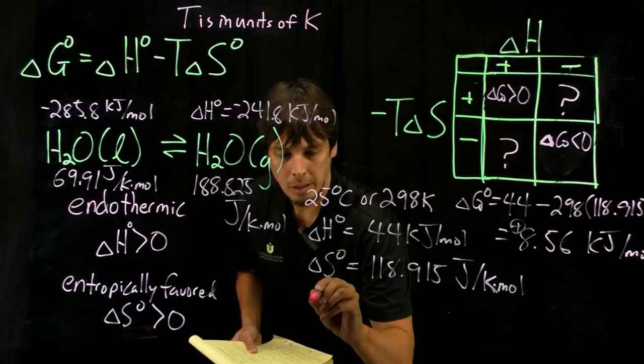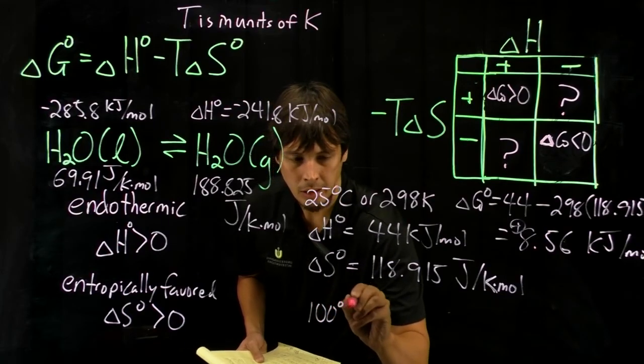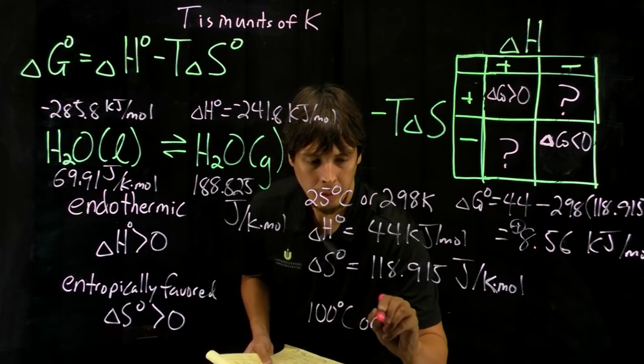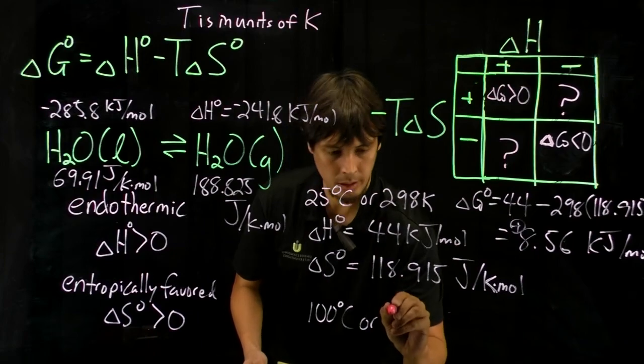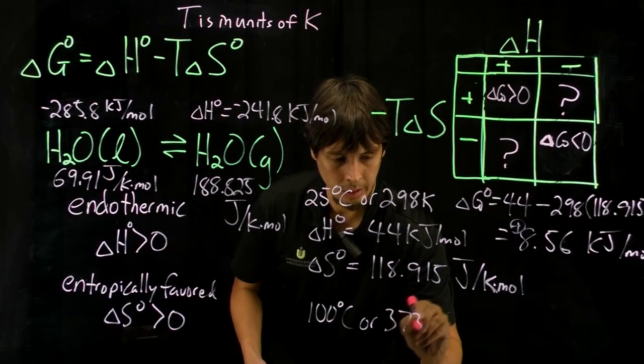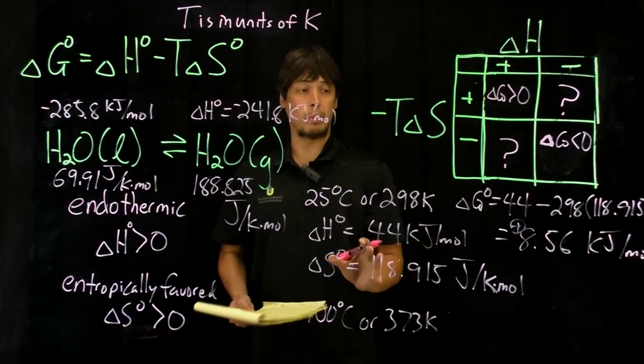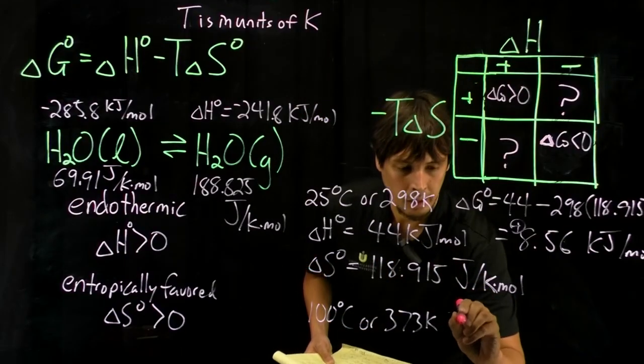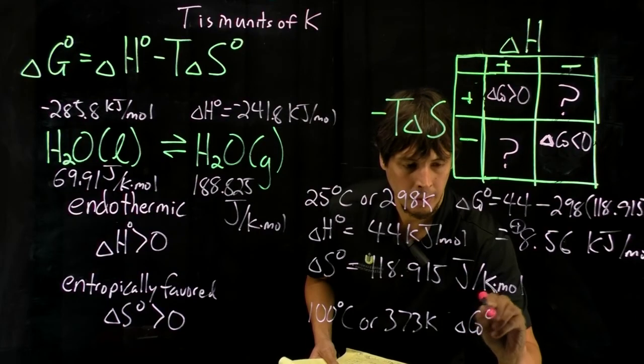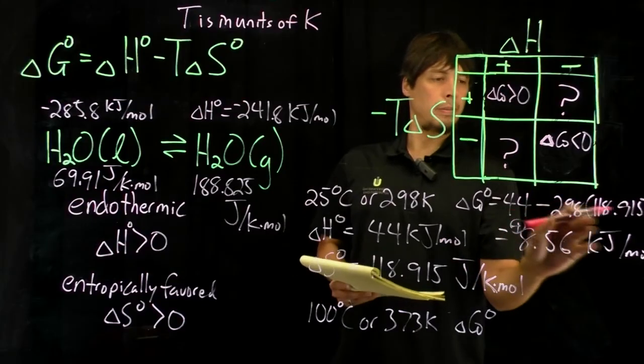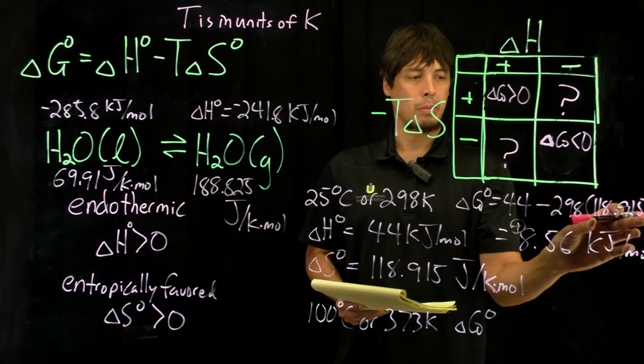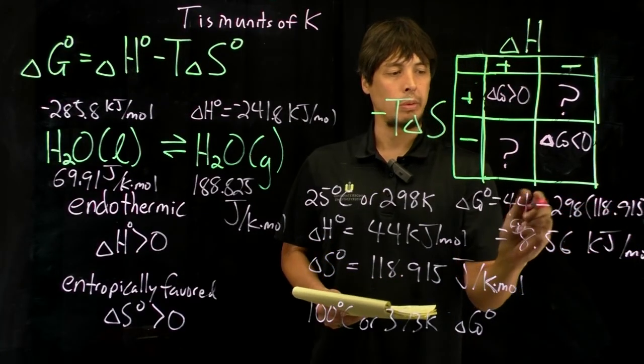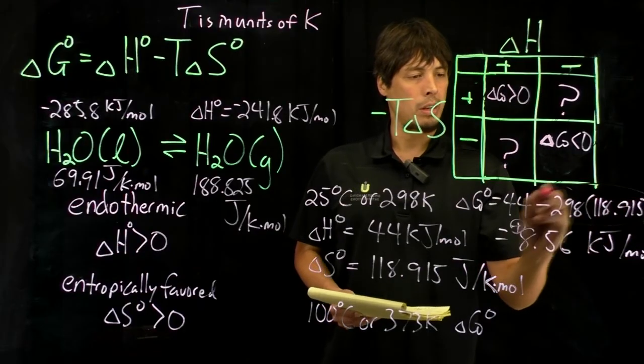But if we increase the temperature to 100 degrees C or 373 K, which is the boiling point of water, what we find is that we're going to multiply the entropic term by a larger number, now 373. So this term is going to be more negative.